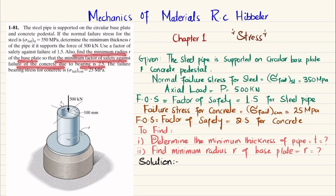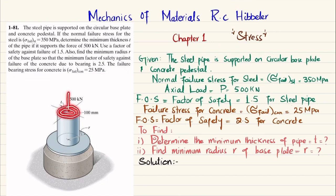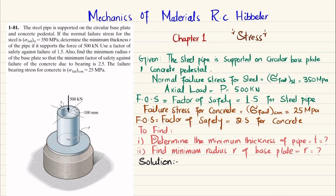The failure bearing stress for concrete is 25 MPa. The pipe carries an axial load of 500 kN. The outer radius is 100 mm, the inner radius is unknown, and thickness t is also unknown. This is the base plate mounted on the concrete base. We have been given all the data, so we need to find thickness t and the minimum radius r of the base plate.